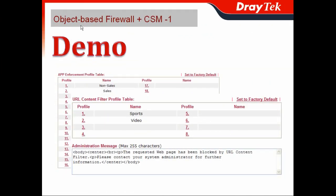When I finish setting up the object-based firewall rules — including the IP object, keyword object, and file extension object — I can now use the Content Security Management to create more comprehensive objects for a highly productive work environment. In the Content Security Management section, I will first use the App Enforcement Profile to create rules for non-salespeople and salespeople. In the App Enforcement Profile, you can configure settings for instant messaging, peer-to-peer, and also block WebHard or P2P streaming.